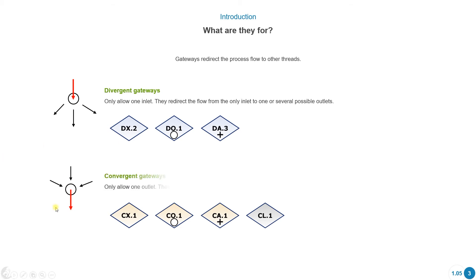And then there's the convergent gateways. What they do is they allow us to group all or some of the threads of their inlets, and they're always going to go through their unique outlet.